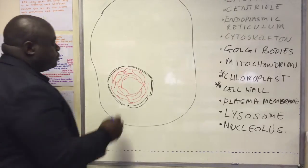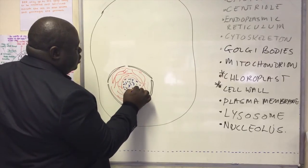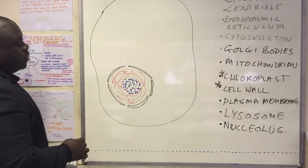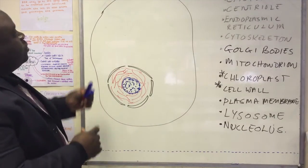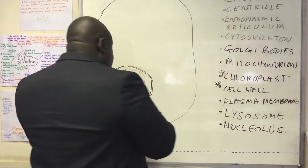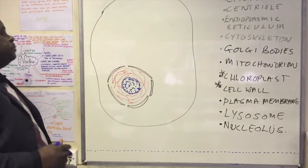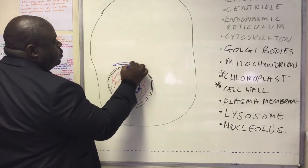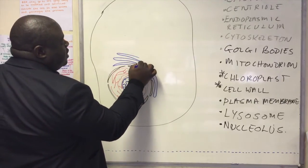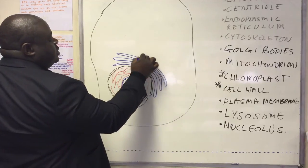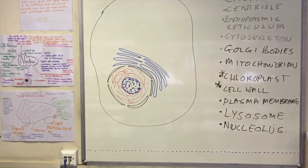Within that structure, we have a distinct structure which we refer to as the nucleolus. So straight away we can start doing some labeling — that would be the nucleus, the nucleolus, and the nuclear envelope with nuclear pores. We can also show the endoplasmic reticulum. These folds are folded membranes called cisternae, which are continuous with the nuclear envelope.